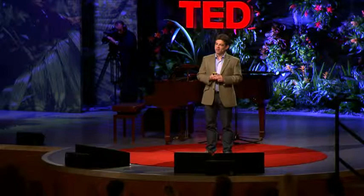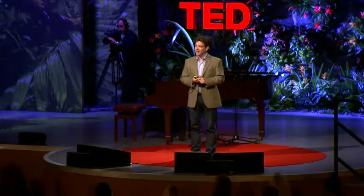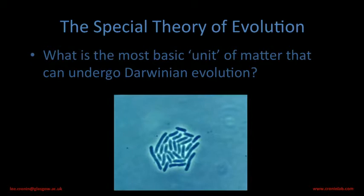So bearing that in mind, as a chemist I wanted to ask myself the question — frustrated by biology — what is the minimal unit of matter that can undergo Darwinian evolution? This seems quite a profound question, and as a chemist we're not used to profound questions every day. When I thought about it, I suddenly realized that biology gave us the answer. The smallest unit of matter that can evolve independently is in fact a single cell — a bacterium.